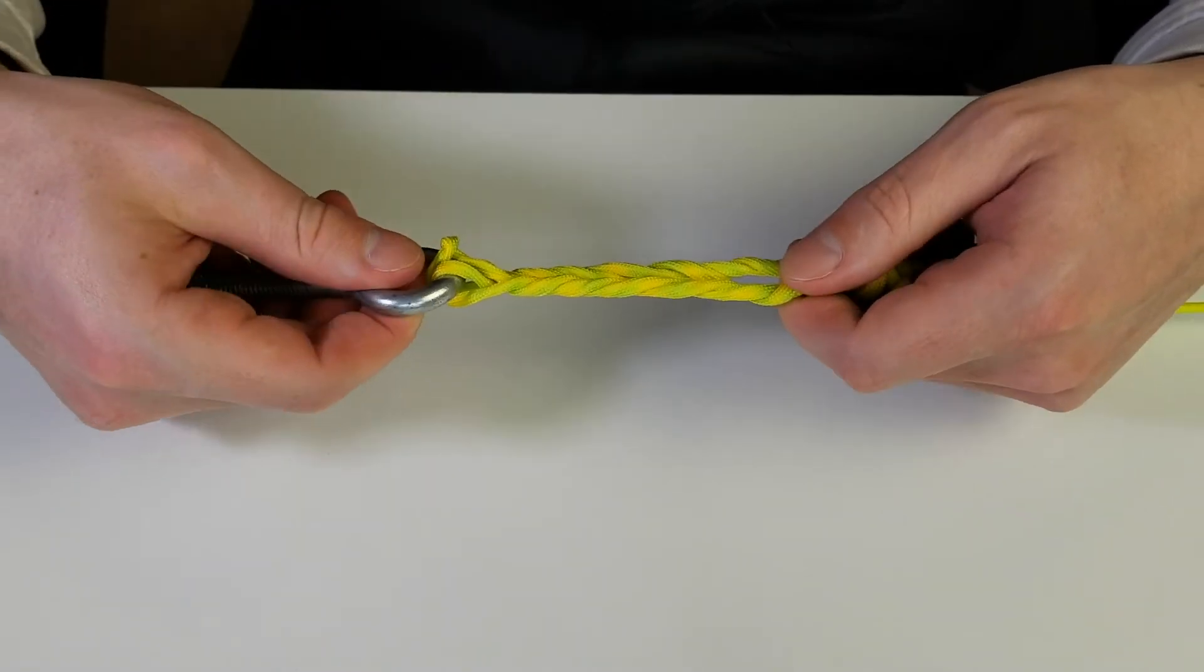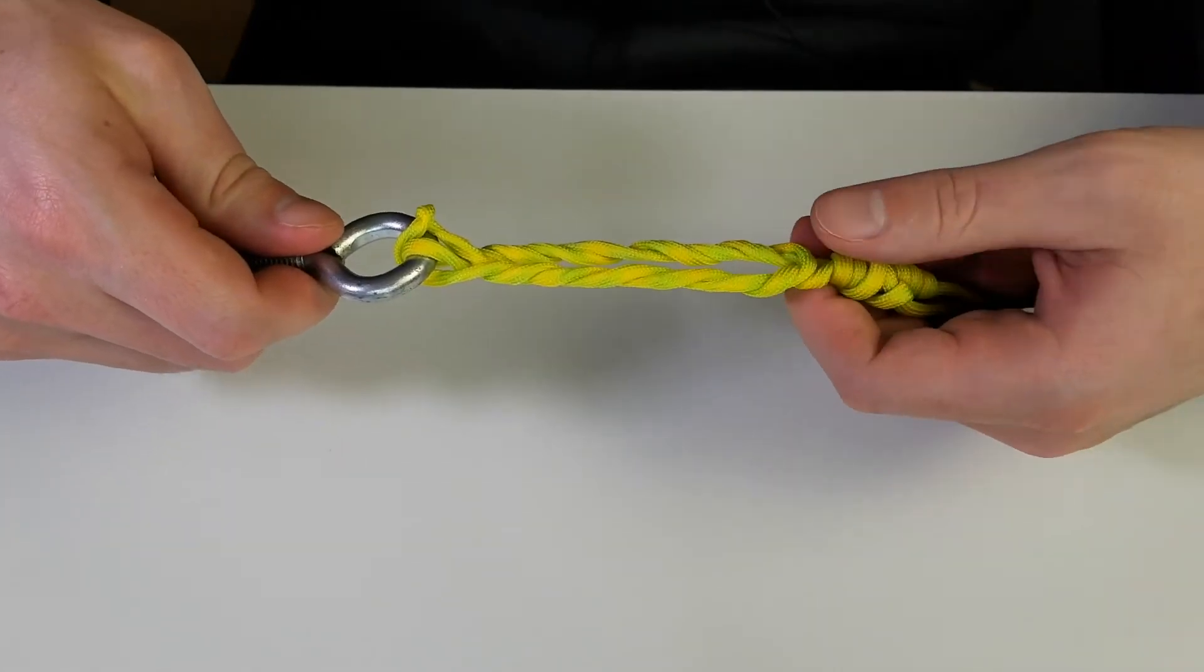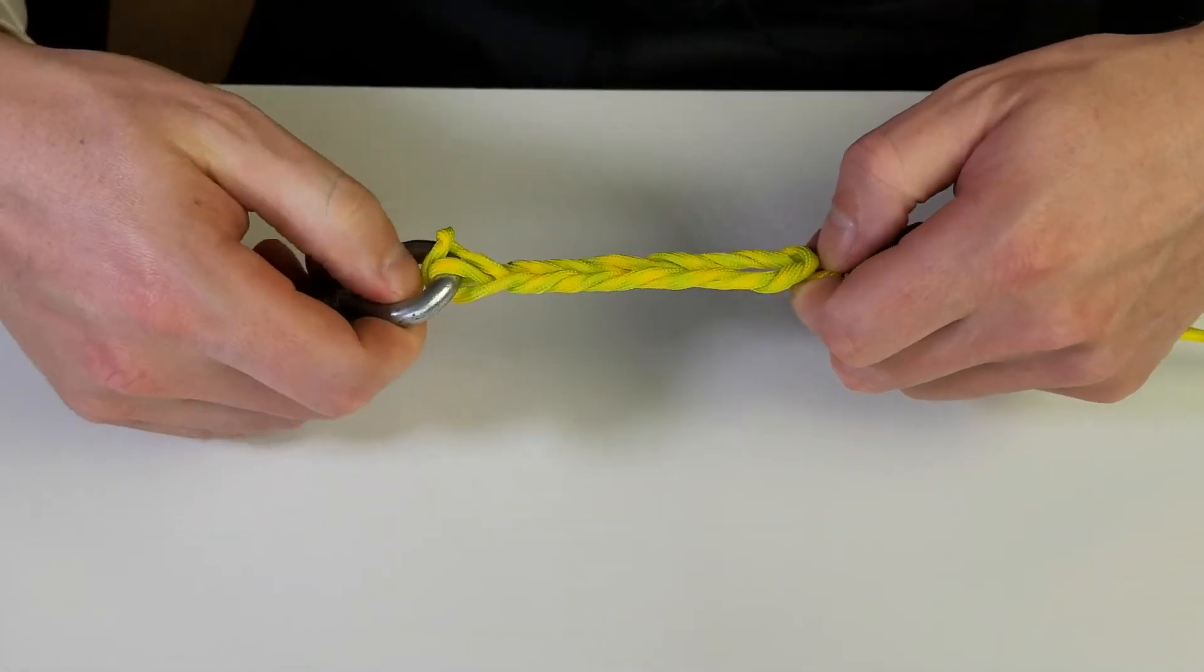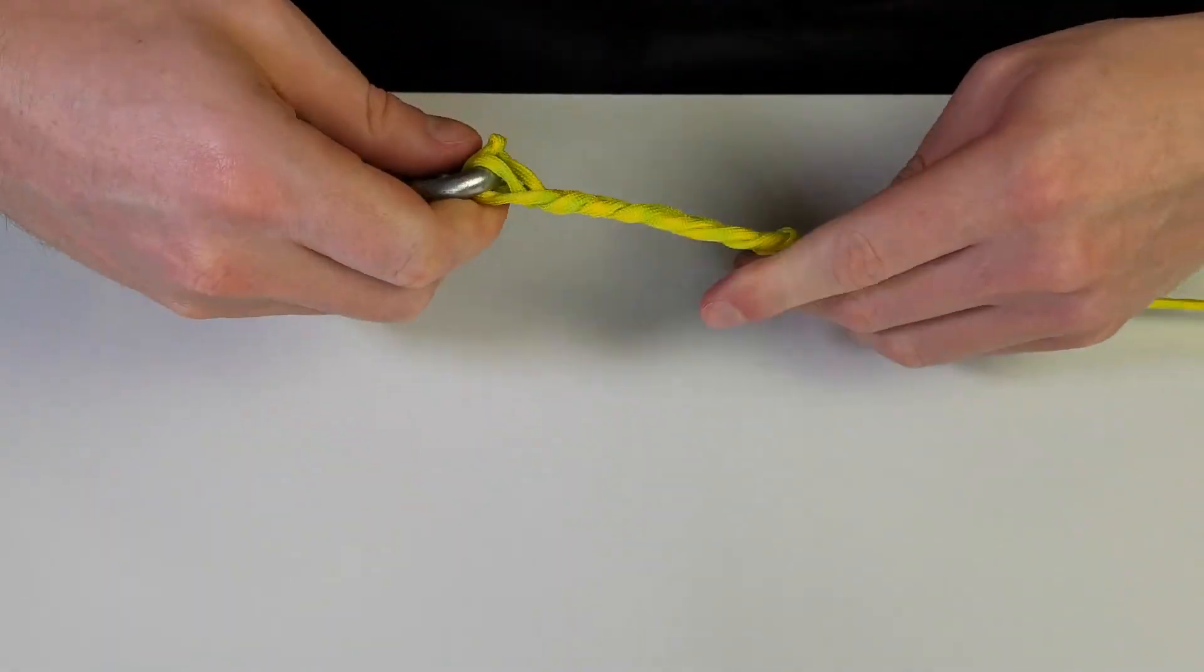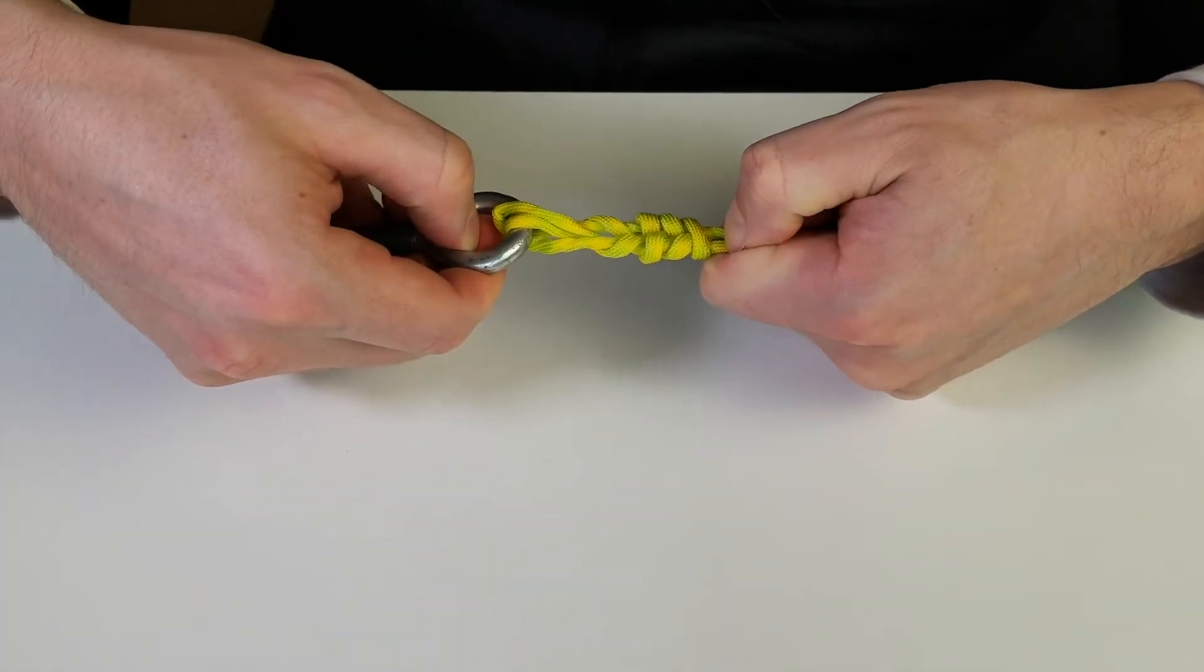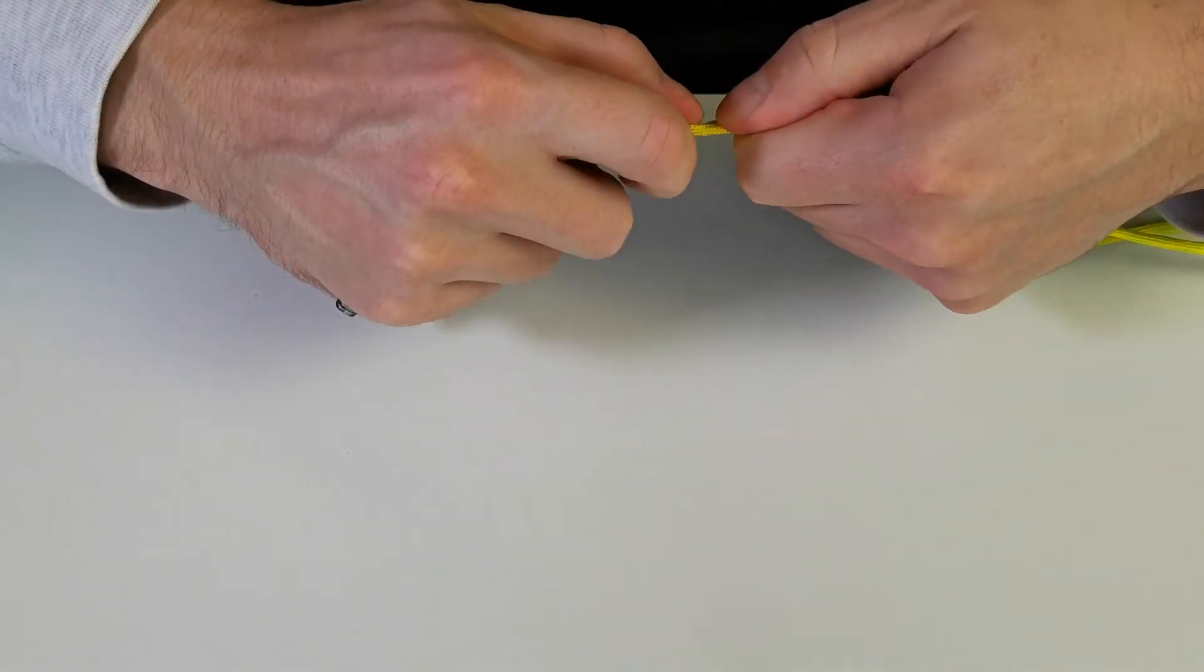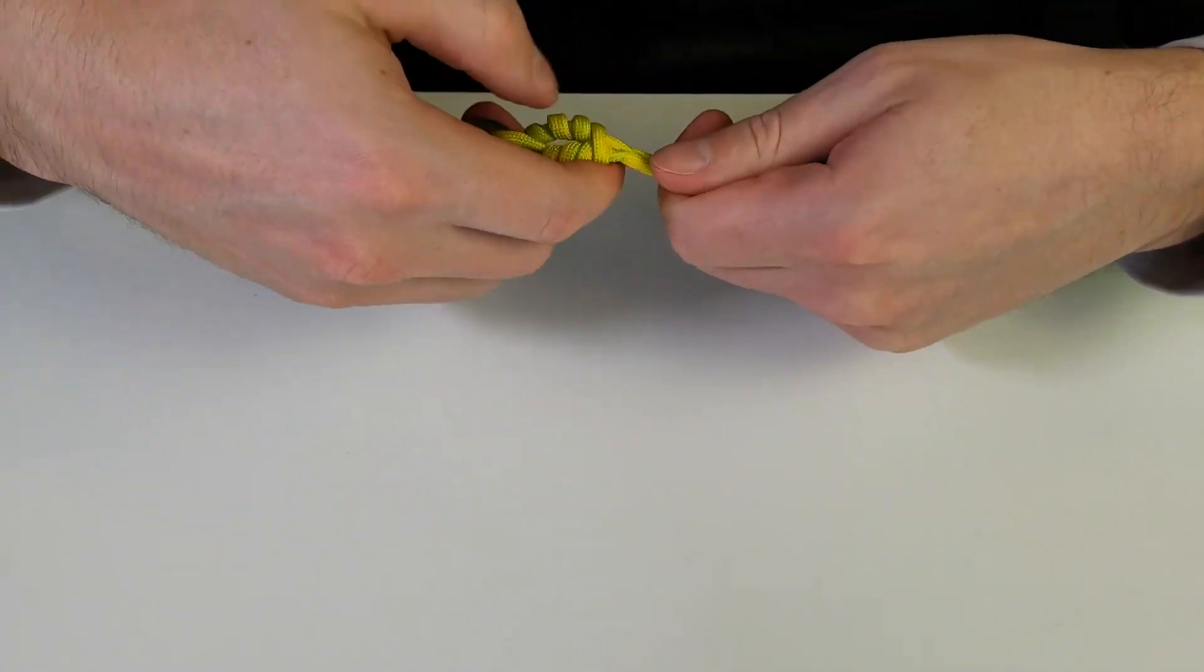All you have to do now is slowly start pulling it tight. I have my swivel, I have my main line here, and you just kind of have to start pulling it and working these wraps down, just like that. Keep pulling this down, pulling it tight.